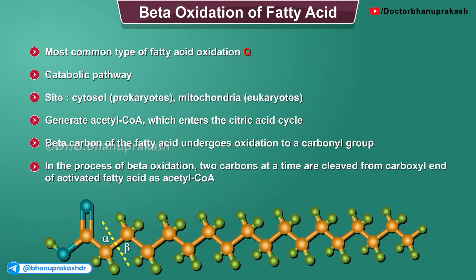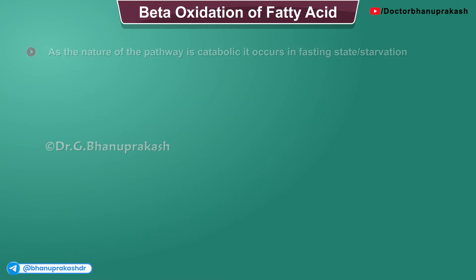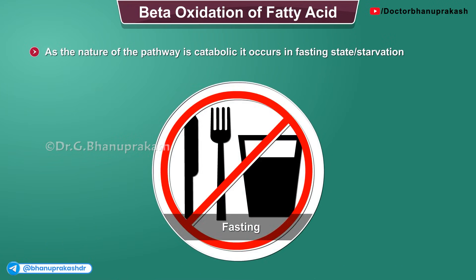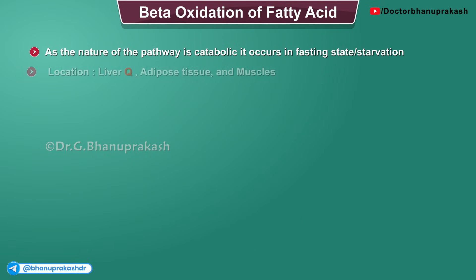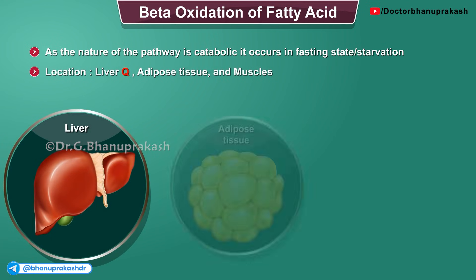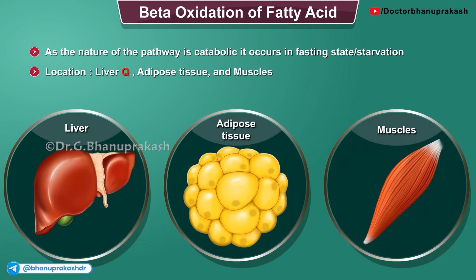In the process of beta oxidation, two carbons at a time are cleaved from the carboxyl end of an activated fatty acid as acetyl-CoA. The nature of the pathway is catabolic, so it occurs in the fasting state or a state of starvation. The site where it occurs is the mitochondria in eukaryotes. Locations include the liver, adipose tissue, and muscles. The pathway is activated by a hormone called glucagon.